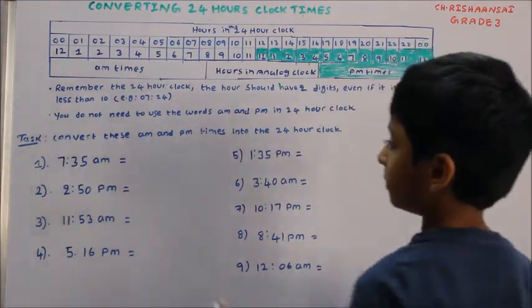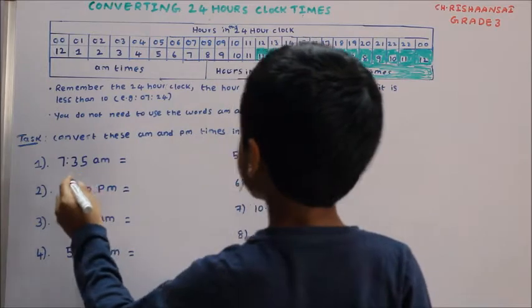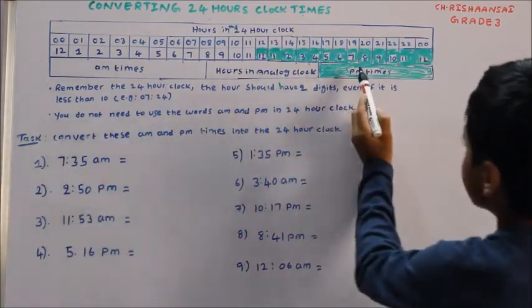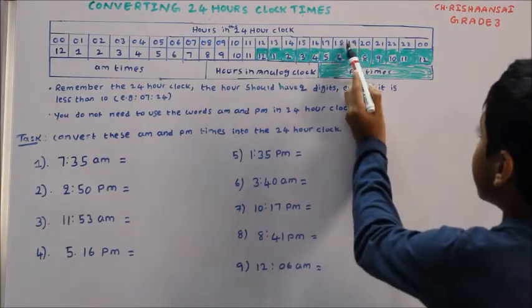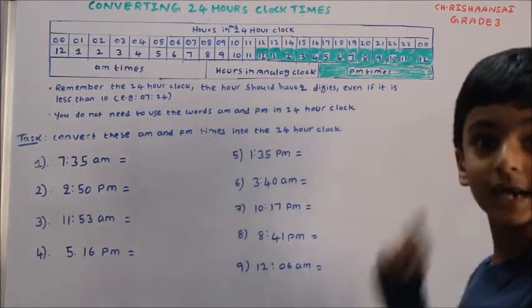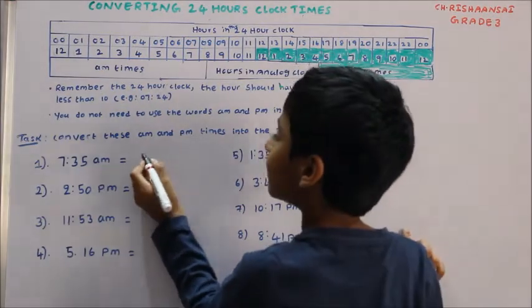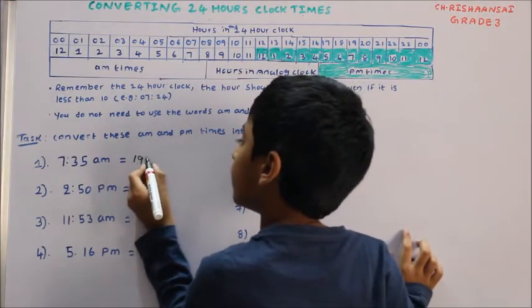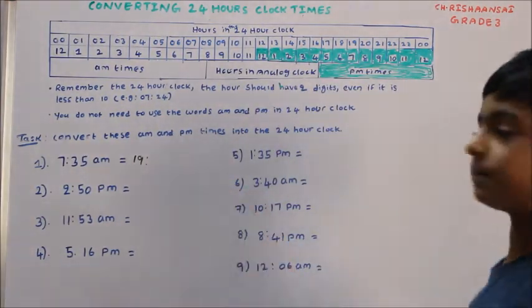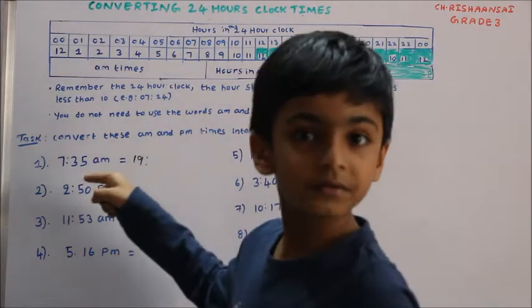First one, 7:35 AM. So here is written 7, and 7 up is written 19, so we need to write 19 and then put two dots and write 35.